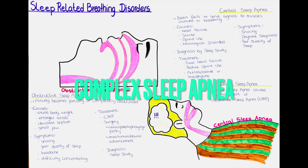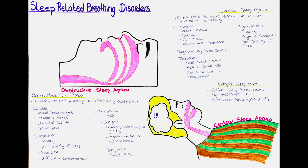Complex sleep apnea syndrome, also known as treatment-emergent central sleep apnea, is a type of sleep disorder that is a combination of obstructive sleep apnea and central sleep apnea. It occurs when a person with obstructive sleep apnea who is being treated with CPAP therapy develops central sleep apnea. In some cases, CPAP therapy can cause a shift in breathing patterns leading to the development of central sleep apnea.